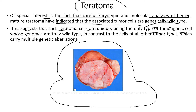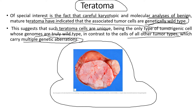Teratoma cells are the only type of tumorigenic cells whose genomes are truly wild type, in contrast to the cells of other tumor types which carry multiple genetic aberrations. To summarize: teratomas arise from germ cells — egg or sperm — which cannot travel to the appropriate sites and accumulate at inappropriate sites in the fetus, and they are genetically wild type regardless of where they are formed.